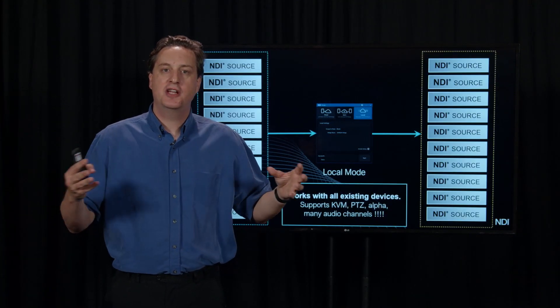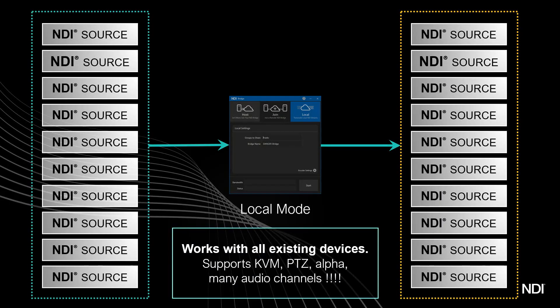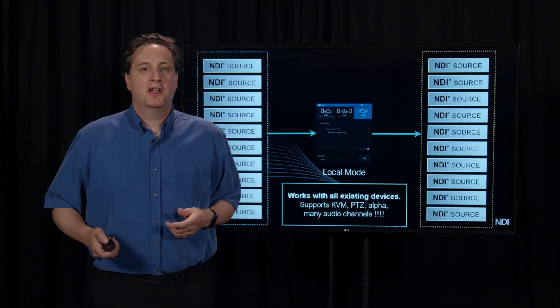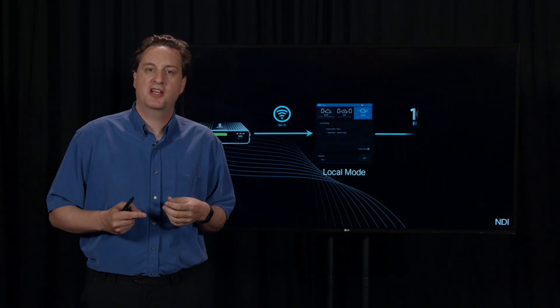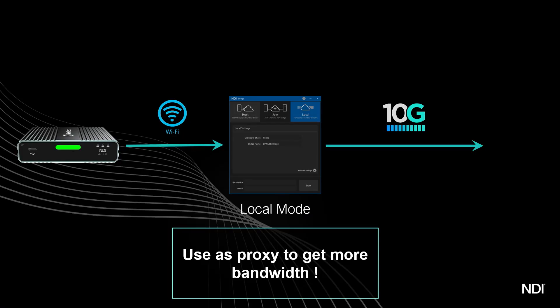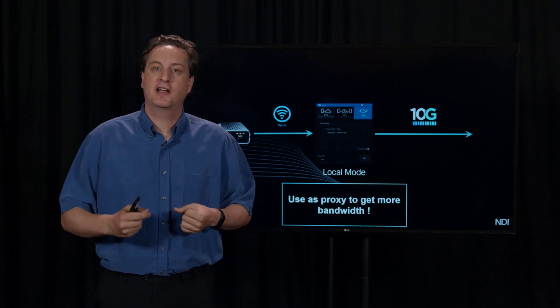It doesn't just send video through — it sends all of the metadata through as well. You can use it with KVM, PTZ control, tally, and all of the other per-frame and per-stream metadata, which means it's taking cameras and video sources and making them available again. This alone is incredibly useful because it acts as a proxy to get you more bandwidth. For example, if you have an iPhone app on a wireless network and 100 people in your company, you don't want all 100 people connecting directly to that iPhone. The wireless network will fall apart, but you can use NDI Bridge to give your whole network far more bandwidth access to that camera.